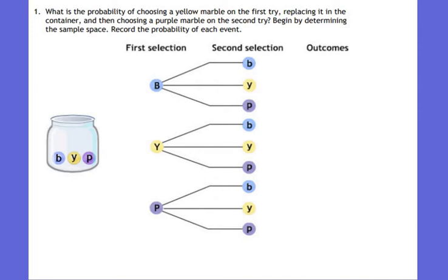So if I picked up a marble out of the jar, the first outcomes that could happen — I could pick up a blue, a yellow, or a purple. That's three different marbles I could pick up. Now the second selection — I need to pay attention to this paragraph. It says after the first try, you're replacing the marble.